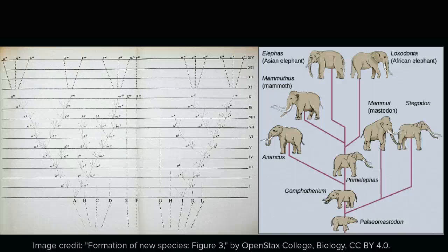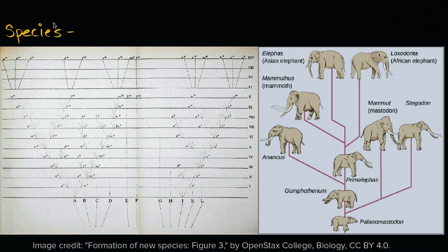In any discussion of biology or evolution, the idea of a species will come up over and over again. We have a whole separate video on species, but the general idea, or the mainstream definition of a species, is a group of organisms that can interbreed and produce fertile offspring.